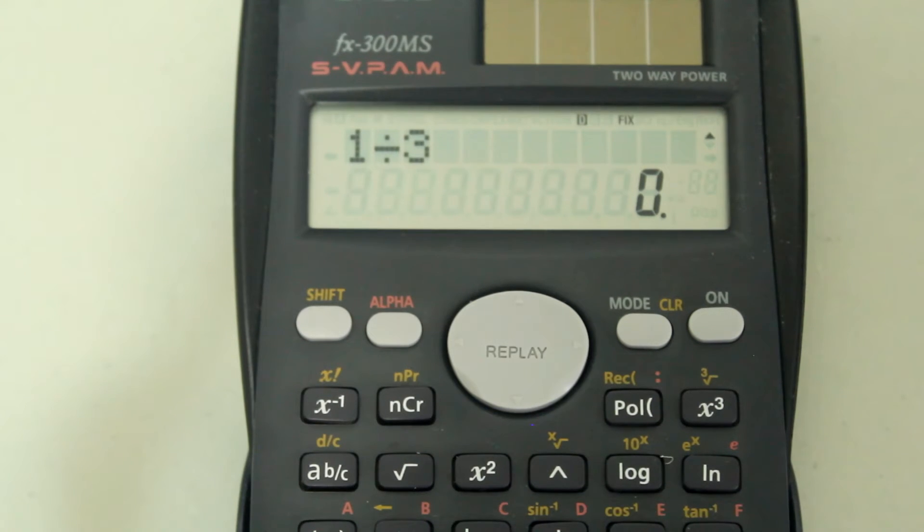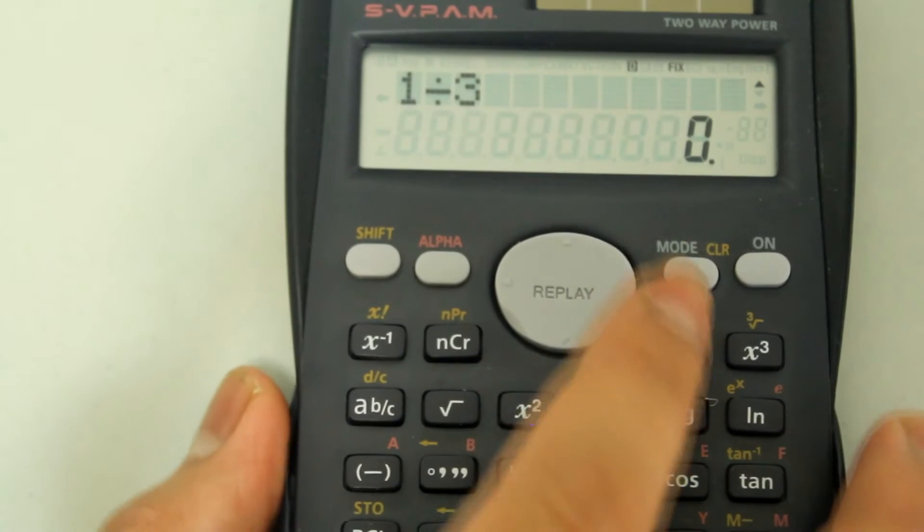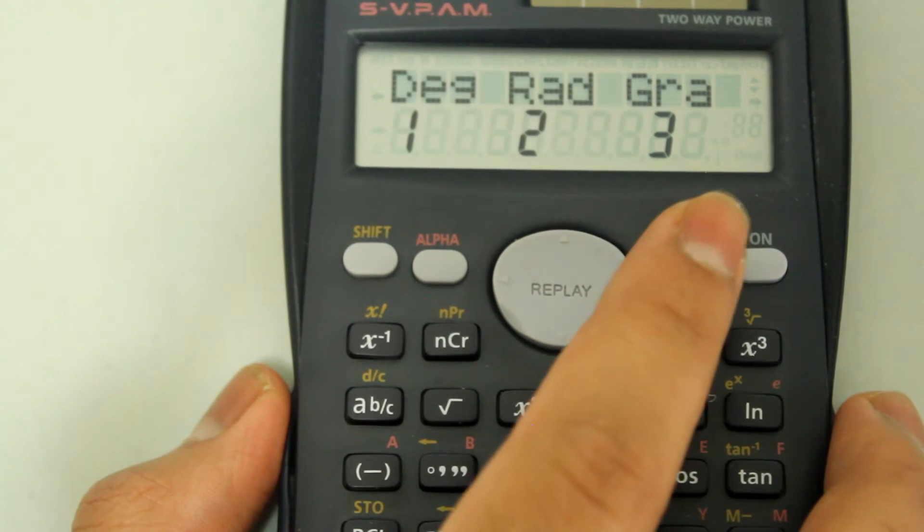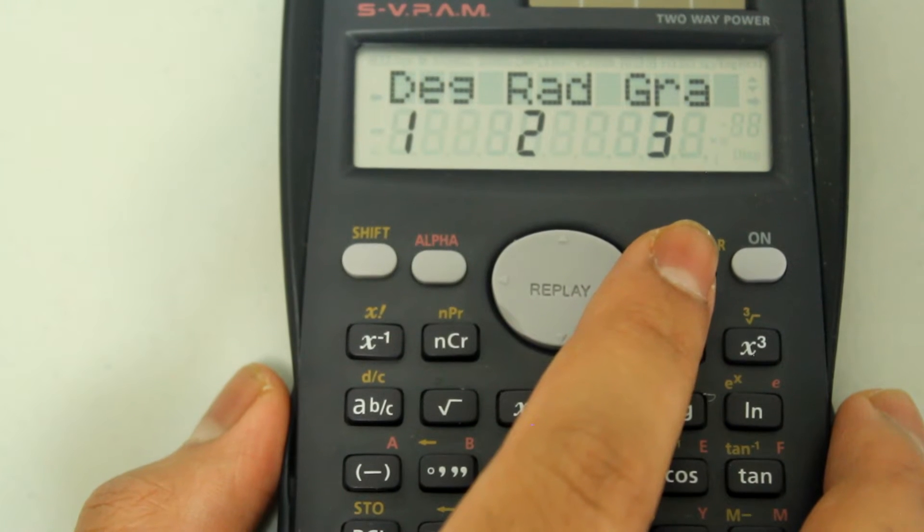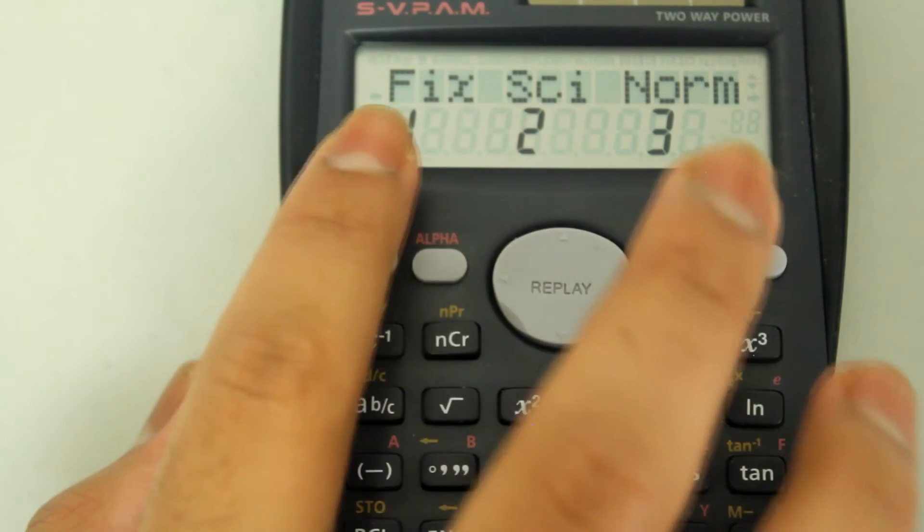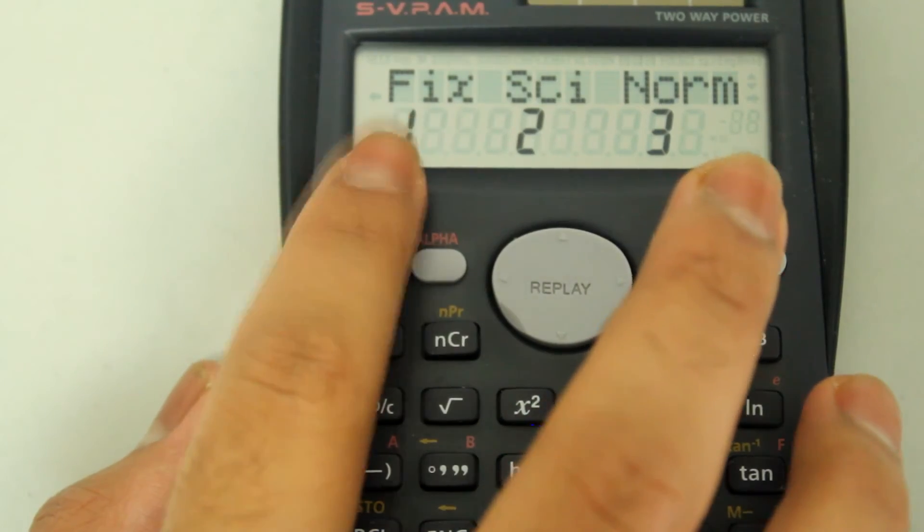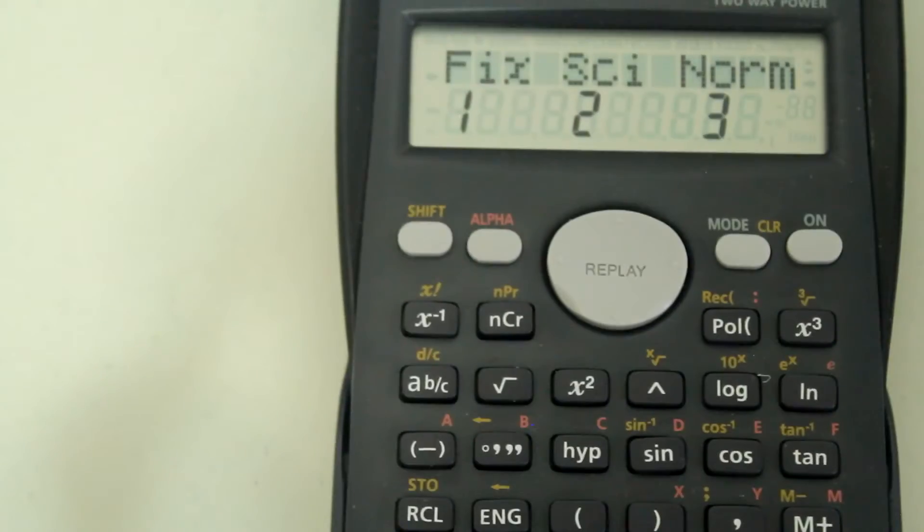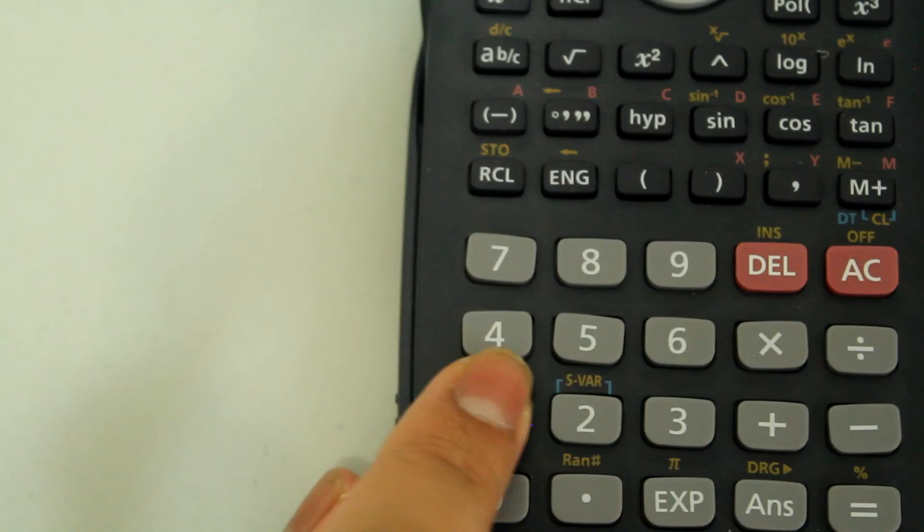If we want to fix that, press the mode button and that brings up a few options. Press the mode button again and we're shown more options. Press the mode button a third time and we're shown the fix option. To select any of these options, type in the corresponding number on the number pad. Fix is number 1, so just hit number 1.